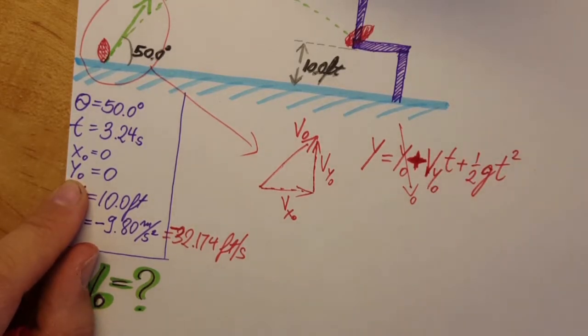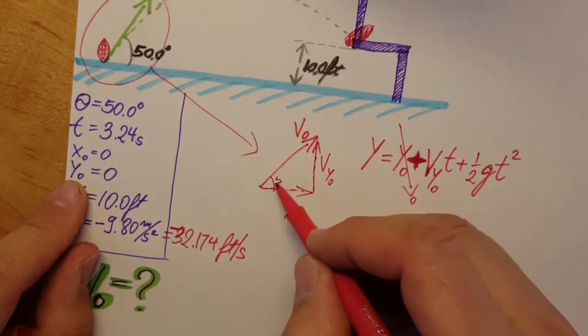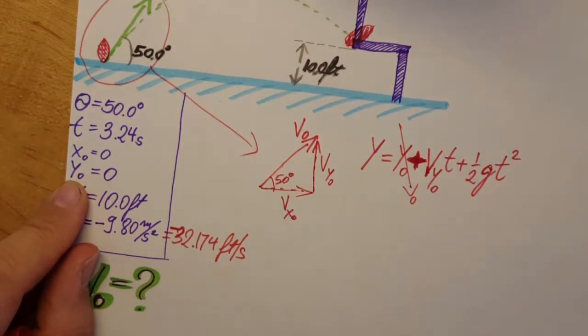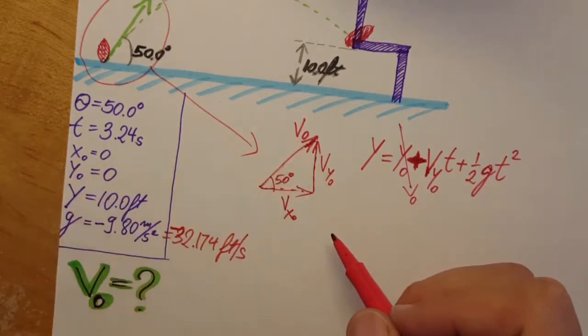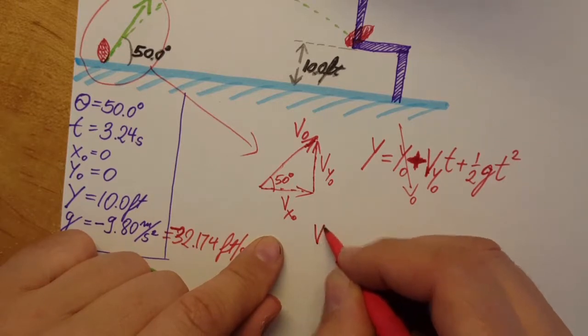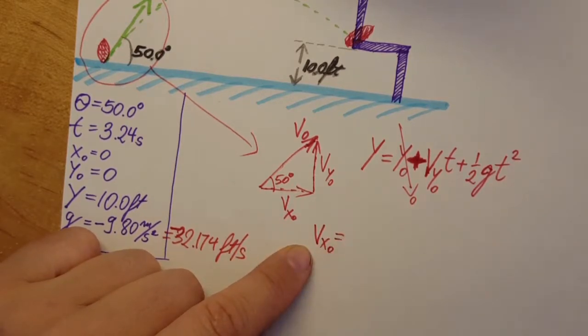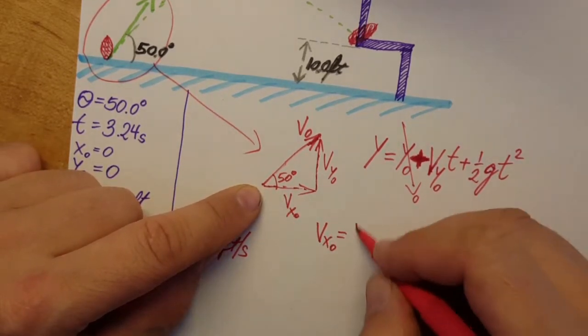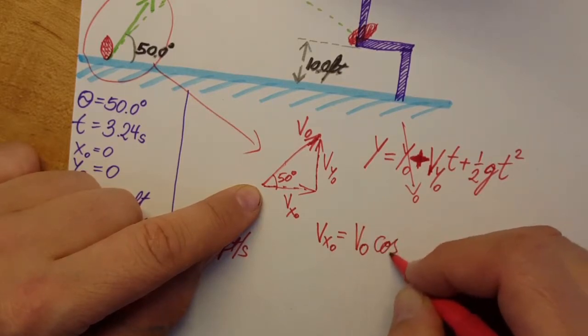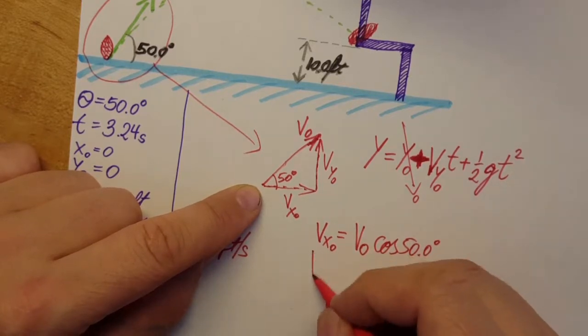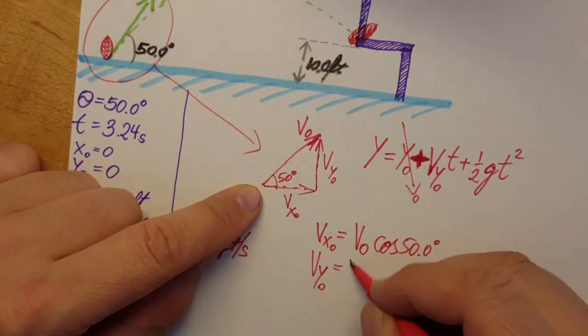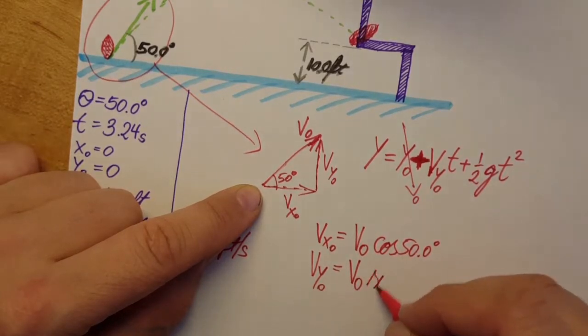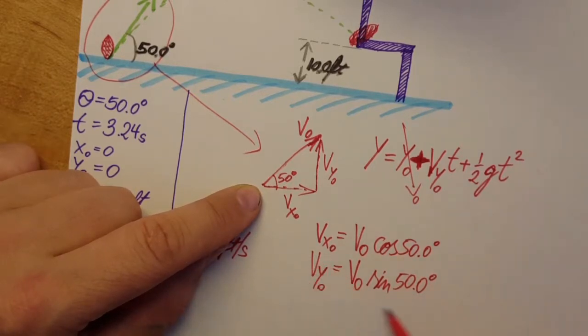Now how are we gonna calculate this one? We're gonna do a little trigonometry since here we know that this is 50 degrees. We're gonna use this triangle to get some values. Vx naught would be this one here and we can also write it as v naught cosine of 50 degrees. Vy naught we can also write as v naught times sine of 50 degrees and this is the one that we're gonna use to plug in here.